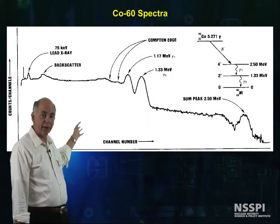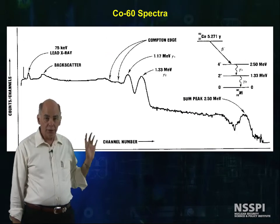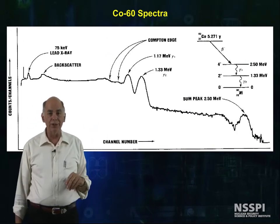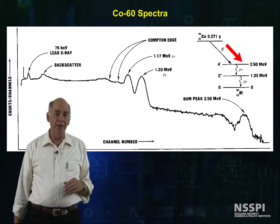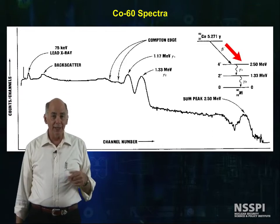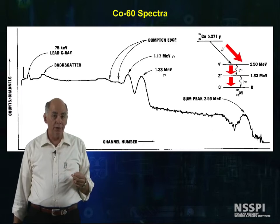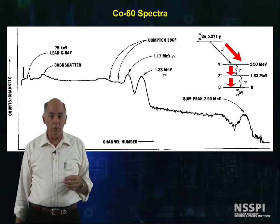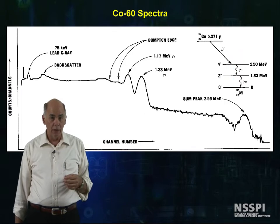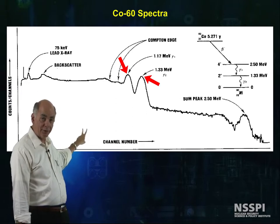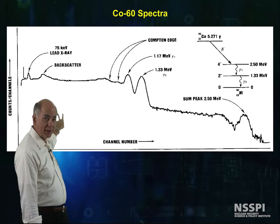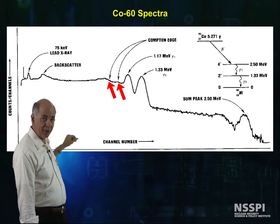Here is the cobalt-60 spectrum. The decay scheme is shown on the right. Cobalt-60 decays to nickel-60 in a very high metastable state, which de-excites by emitting two gamma rays, one at 1.17 MeV and one at 1.33 MeV. We can locate the two photopeaks for the 1.17 MeV gamma and the 1.33 MeV gamma, and we can locate their associated Compton edges.